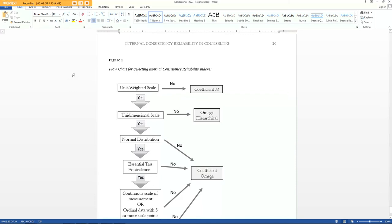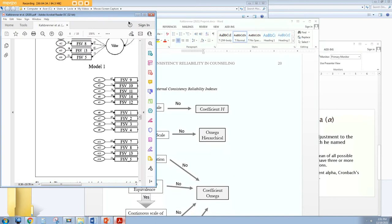So one example here in this figure, one thing to look at when trying to determine what's the most appropriate internal consistency reliability index for me, is first to look at do we have what's called a unit weighted scale? And a unit weighted scale means that the correlations between the items and the total construct are going to vary. And in most social sciences research, when we use scales that are based on classical test theory, they're going to be unit weighted scales. So if we meet the unit weighted scale assumption, then we want to look for the dimensionality of the scale. And for both alpha and omega, you need to have what's called a unidimensional scale.